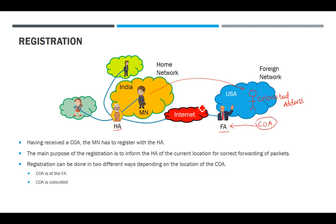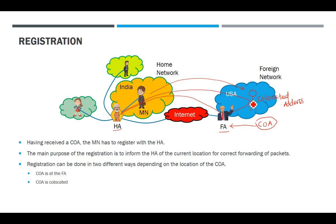When the COA is maintained by the foreign agent, the tunnel is created from your home agent to the foreign agent. Any data received by your home agent will be sent through this tunnel to the foreign agent, and the foreign agent will send the data to you. But if it is a co-located address, your device gets a new address and the tunnel is created from the home agent directly to you.